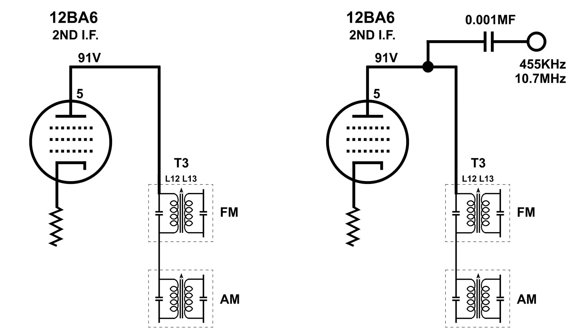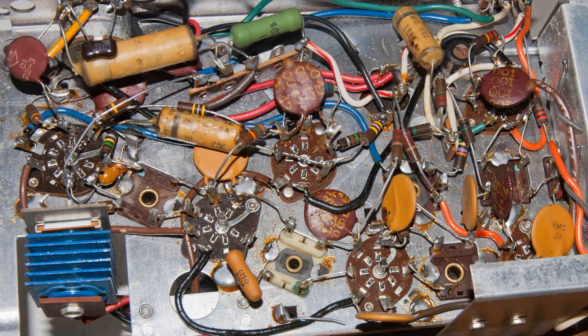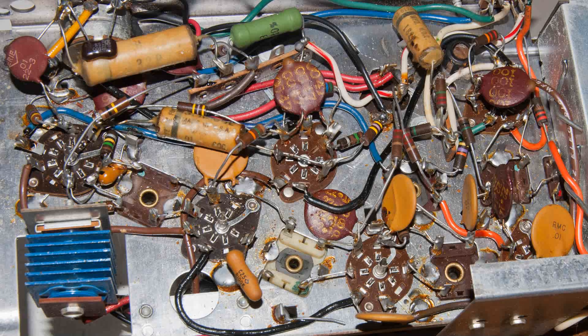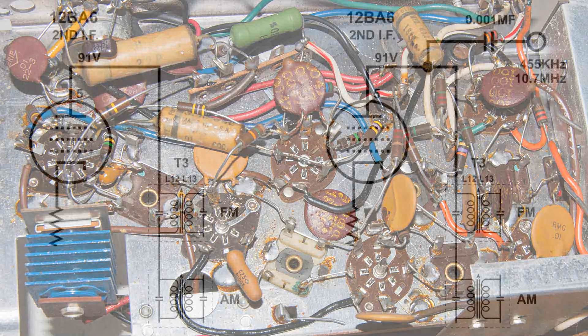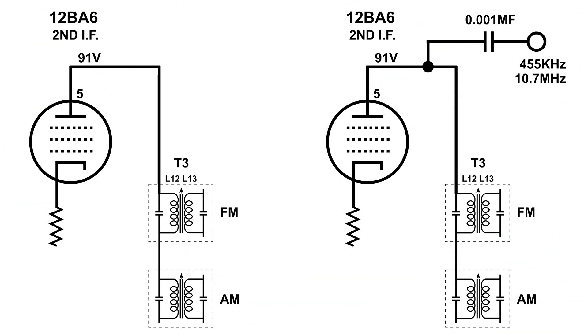To prove that the 455 wasn't there, in this next video I start with the FM signal and shorted it out with a 0.001 microfarad capacitor - high enough to short out the RF to ground - and the signal goes away. But when I switch it over to AM and do the same thing, it stays there. So the 455 cannot be there.